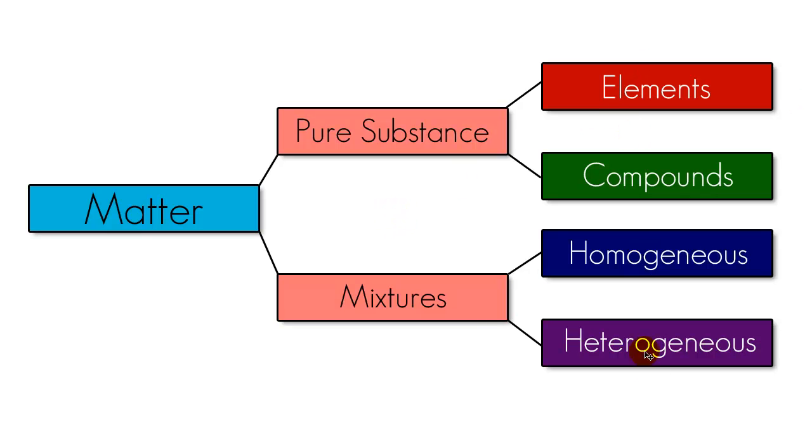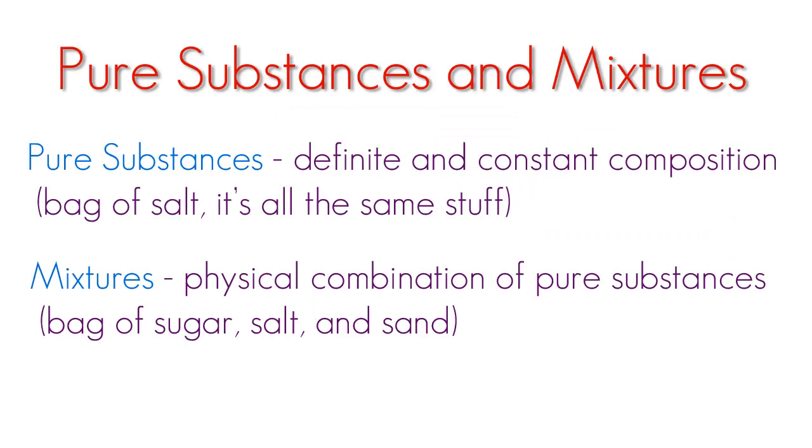First, before we get into all this, let's determine what the difference is between a pure substance and a mixture. If we can read the formal definition, it says pure substances have definite and constant composition. For example, a bag of salt. Mixtures are a physical combination of pure substances. And if anyone just reads this stuff and is like, oh that makes sense, that's crazy because who talks like that?